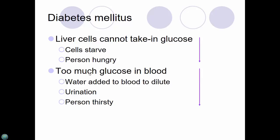Diabetes insipidus is actually a water disease — people drink lots of water and their water regulation is all messed up. I just want you to know primarily that in diabetes the cells are starving and the person is hungry.